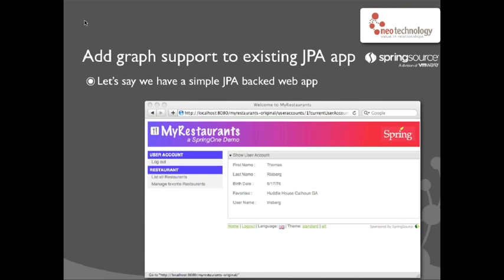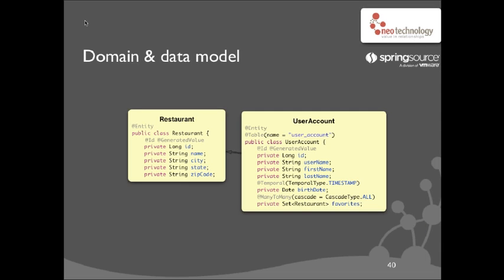To paint a scenario for you, let's say that we have an existing JPA app up and running. I'm reusing the example that was shown on stage at Spring One last year. This particular app lists restaurants and you manage favorite restaurants. So you have users and you have restaurants and you can mark them as favorites.